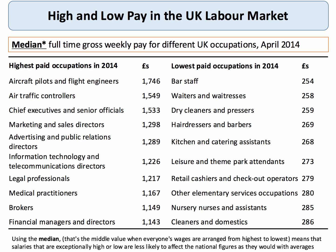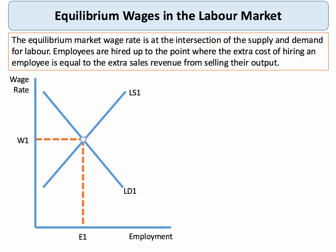But for now let's focus on the basic theory of equilibrium wages. The equilibrium wage in a particular labour market is the intersection of the supply of and the demand for labour. We normally assume that employees in a profit-maximising business will be hired up to the point where the extra cost of taking on an employee — the marginal cost of the extra worker — equates to the extra sales revenue from selling their output, be it a good or a service. So in our diagram here, W1 is the equilibrium wage and E1 is the equilibrium employment level.